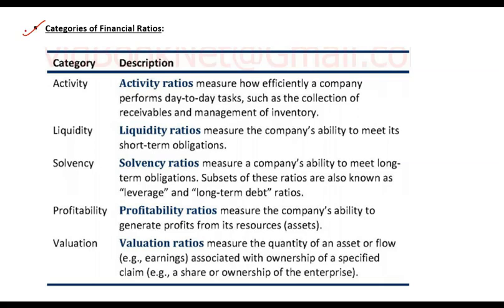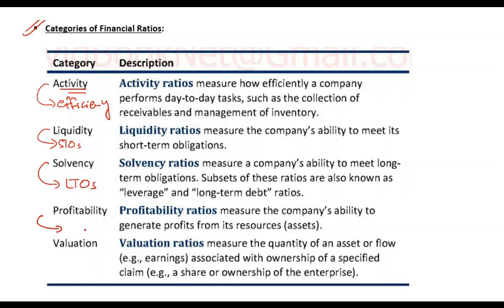Moving on to the main part: when we talk about ratios, overall ratios can be divided into five categories. Activity ratios relate to efficiency and productivity — how productive or efficient a company is. Liquidity is the ability to meet short-term obligations. Solvency is the ability to meet long-term obligations. Profitability is the overall ability to generate profit on revenue — profit generated per unit of revenue or per unit of asset, that is margins or markup. Valuation refers to ratios used to find out the value or right price of the company.